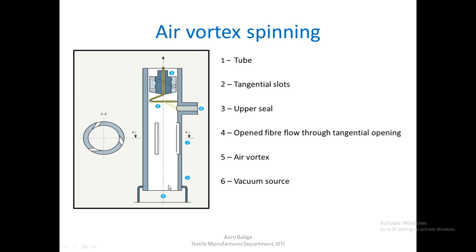We simply insert a seed yarn through the opening in the seal so that the seed yarn starts rotating because of the air vortex. To make fresh yarn, we feed opened fibers through the inflow marked as four. The seed yarn grasps these fibers, and since the open end is rotating at the same time, it collects the fibers onto itself and rotates around them. A withdrawal roller system then takes up the continuously formed yarn.